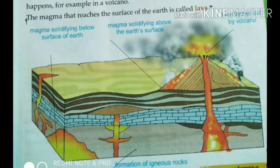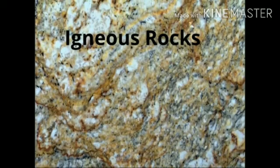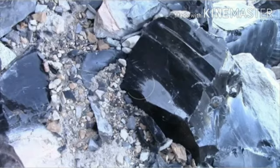Dear students, do the practice of drawing this diagram as it is related with formation of igneous rocks. Igneous rocks have fine texture. They are dense and dark in color. They contain minerals such as mica, feldspar and quartz. They also contain silica, iron and magnesium.